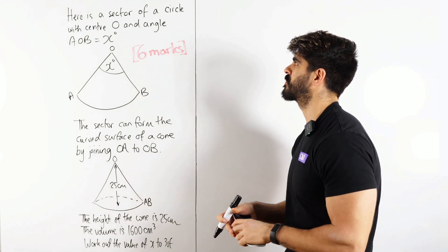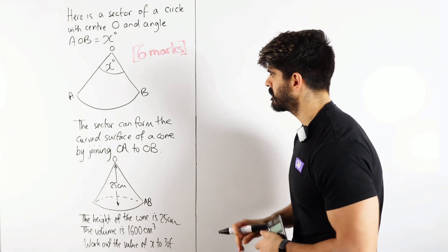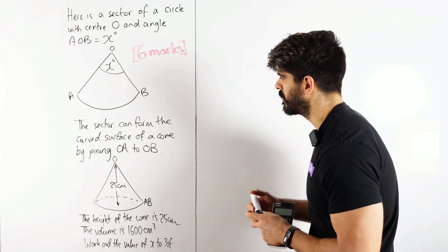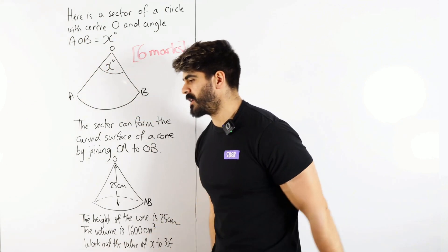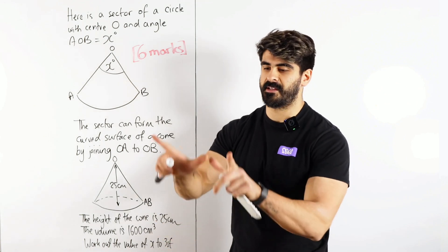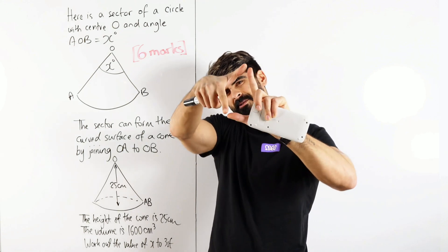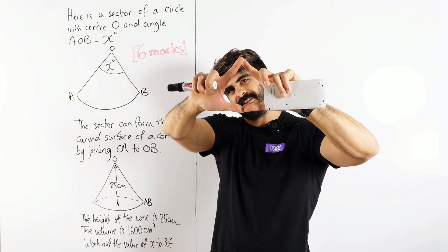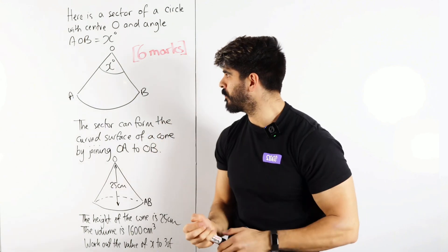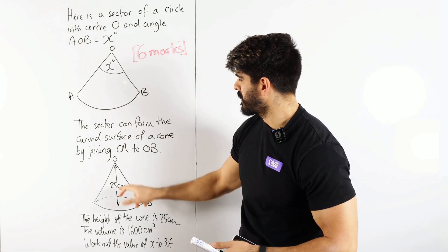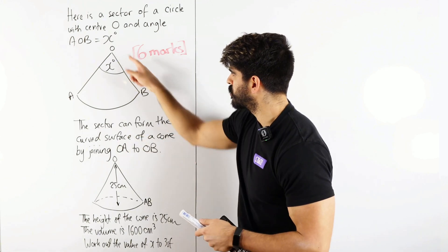The question says: here is a sector of a circle centre O with angle AOB equal to X. The sector can form the curved surface area of a cone by joining OA to OB. So, in a nutshell, you have a sector like this, and if you wrap it around, you form a cone. When you wrap that piece of paper around itself, it will form a cone, where the sector just becomes the curved surface area.